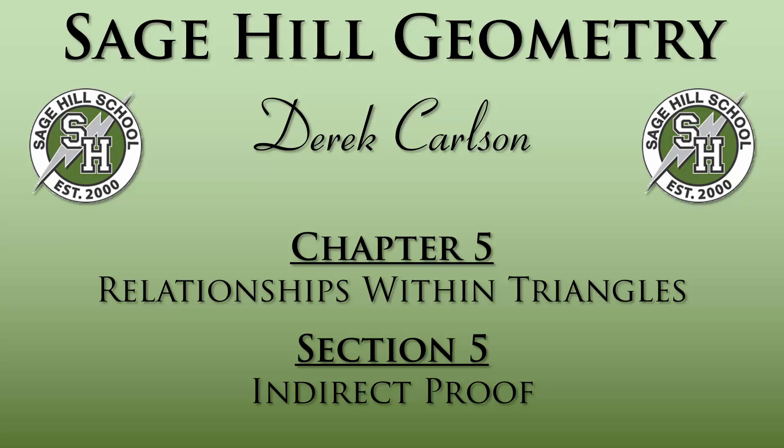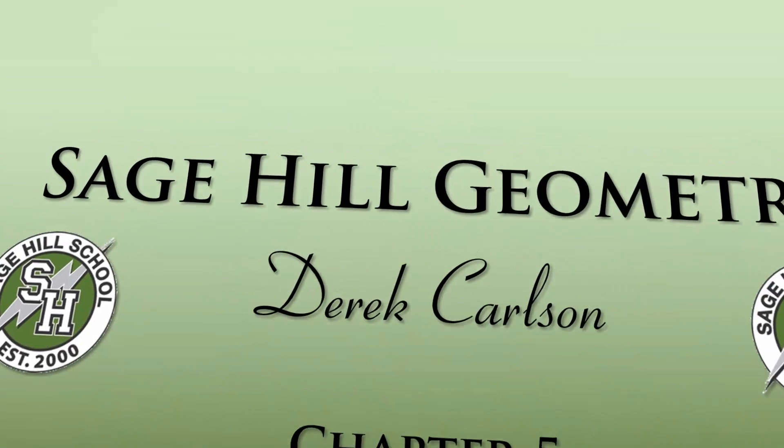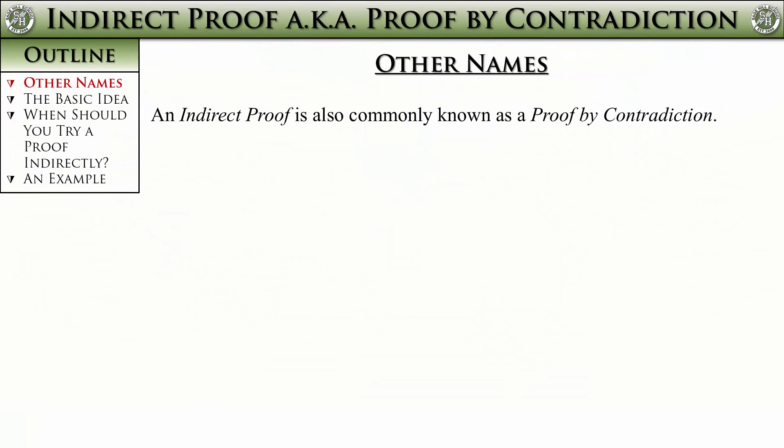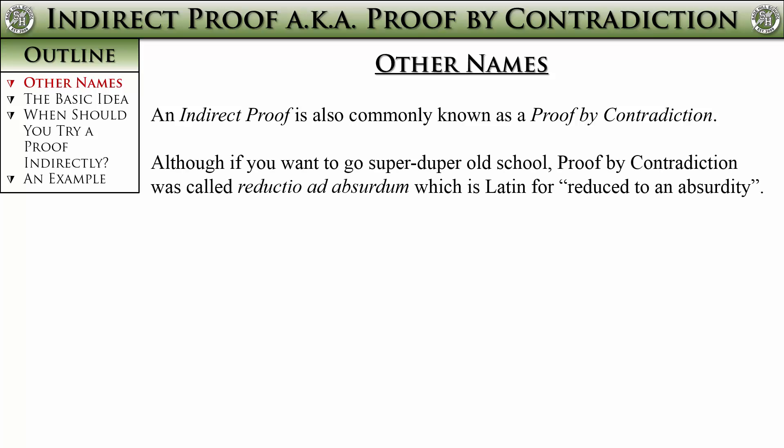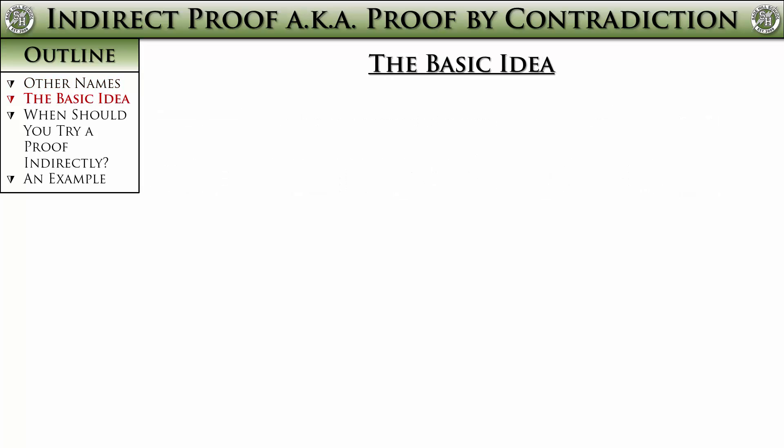Section 5.5 is all about indirect proofs. An indirect proof is also commonly known as a proof by contradiction. If you want to go super duper old school, you can call it by this Latin phrase which means 'reduced to absurdity.' That seems a bit much though.